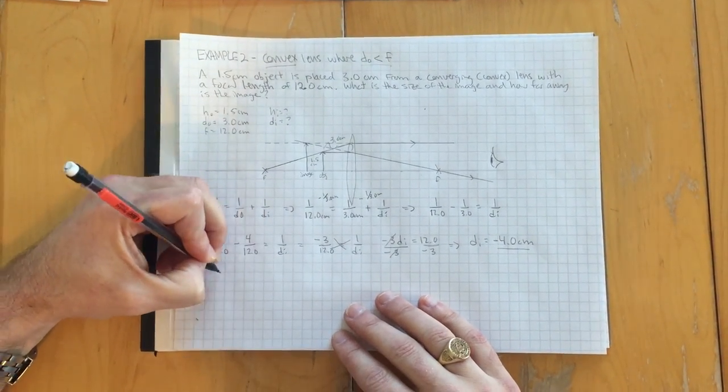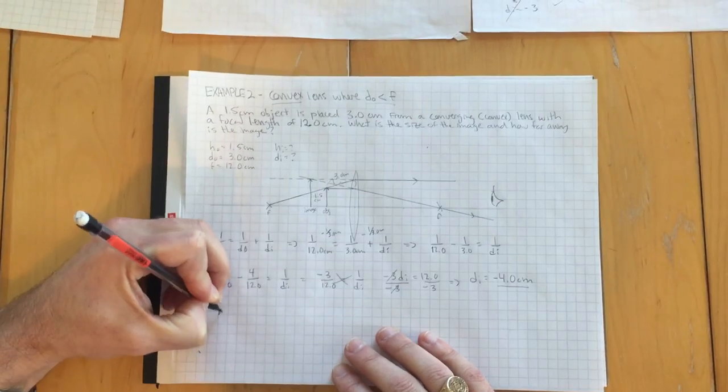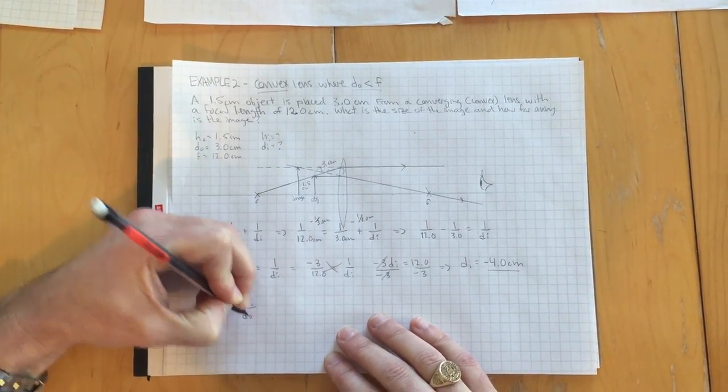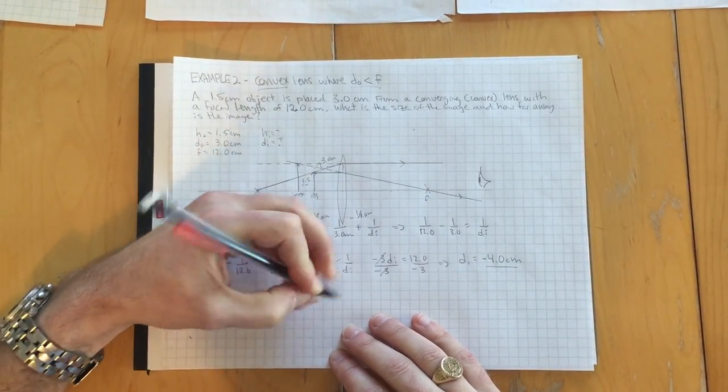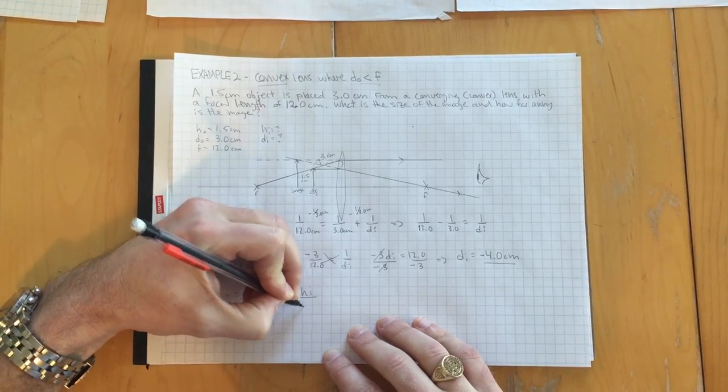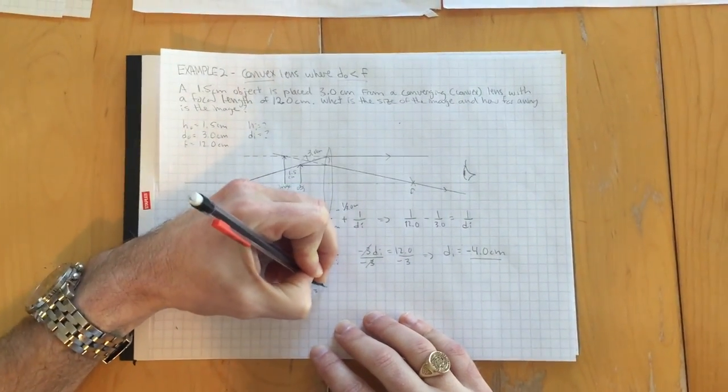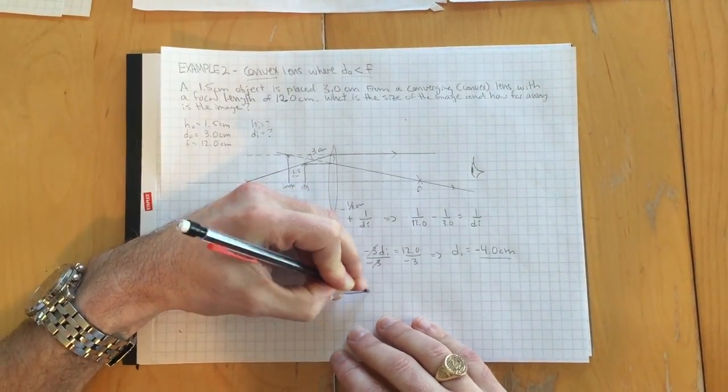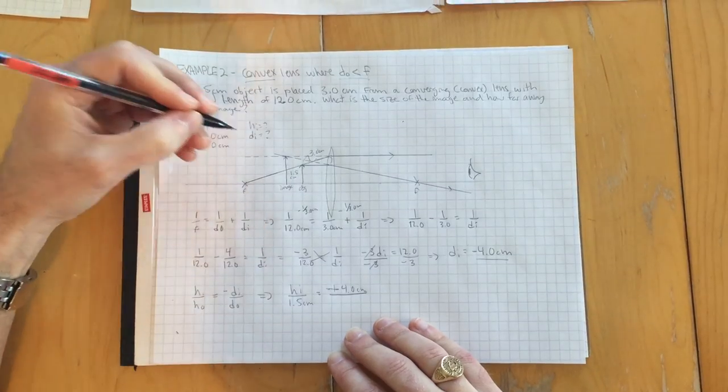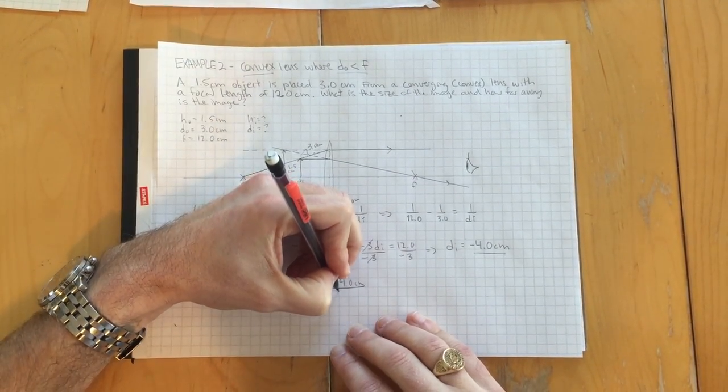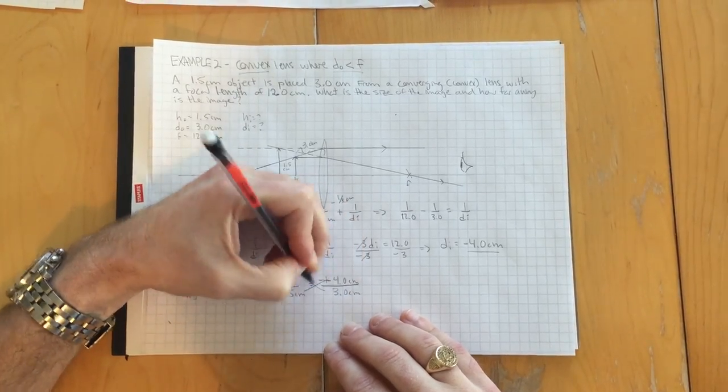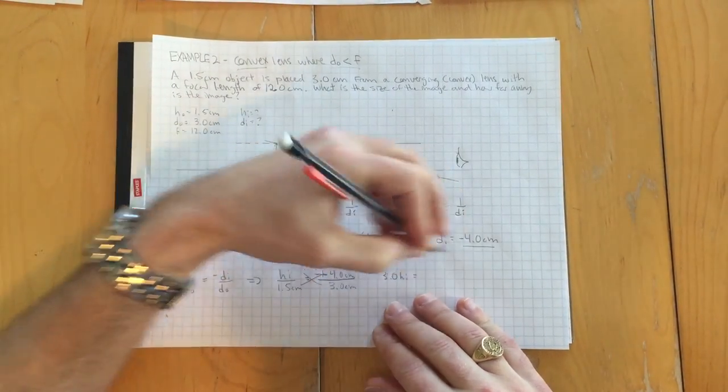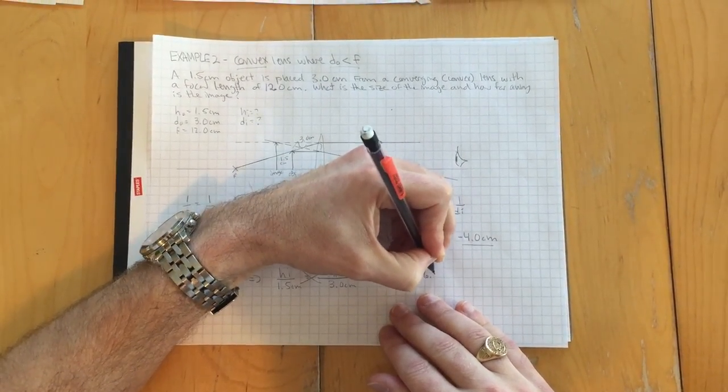We'll do the height then or the size of whatever the size of this is, what the magnification would be. It's HI over HO again equals minus DI over DO. That is going to be HI over the height of the object was 1.5 centimeters equals minus minus four centimeters, which is just really plus four, right? And the distance the object was 3 centimeters in the first place.